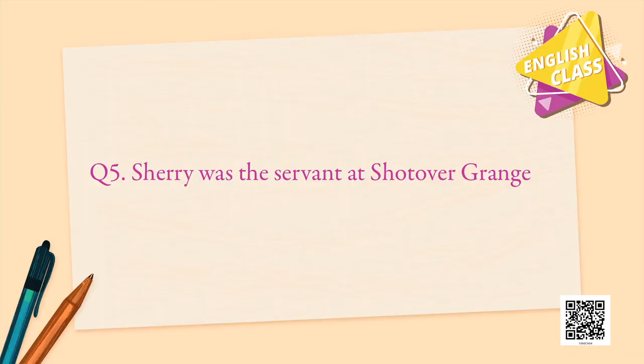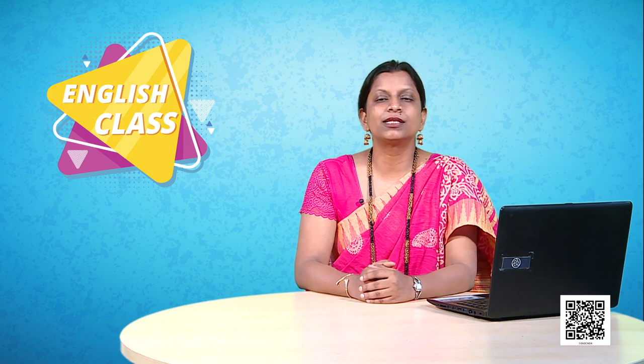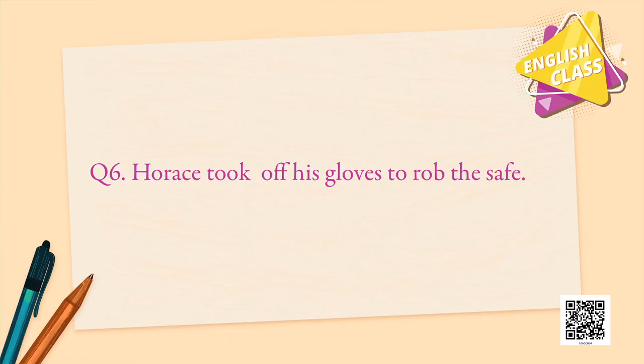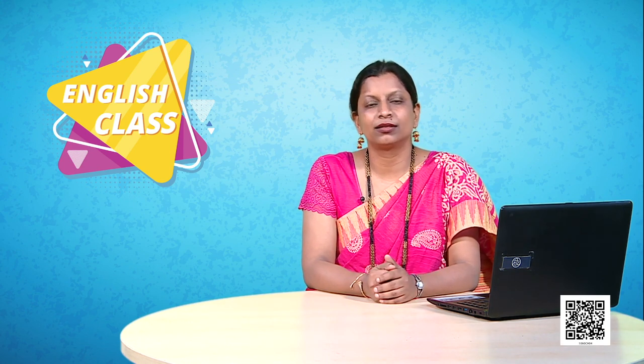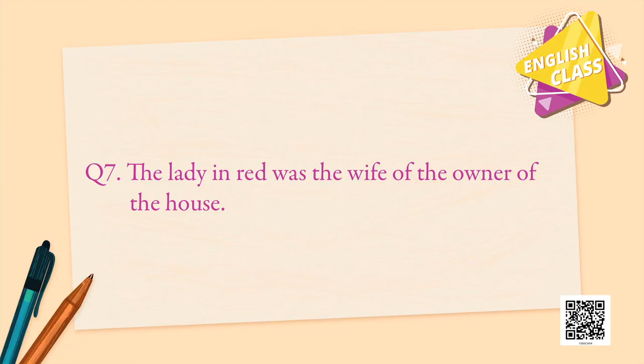Sherry was the servant at Shotover Grange — false; Sherry was a dog. Question six: Horace took off his gloves to rob the safe. You might think it is true, but Horace took off his gloves to light the cigarette for the lady, not to rob the safe. He was careless, so the answer is false. The lady in red was the wife of the owner of the house — false; everyone must have got that correct.